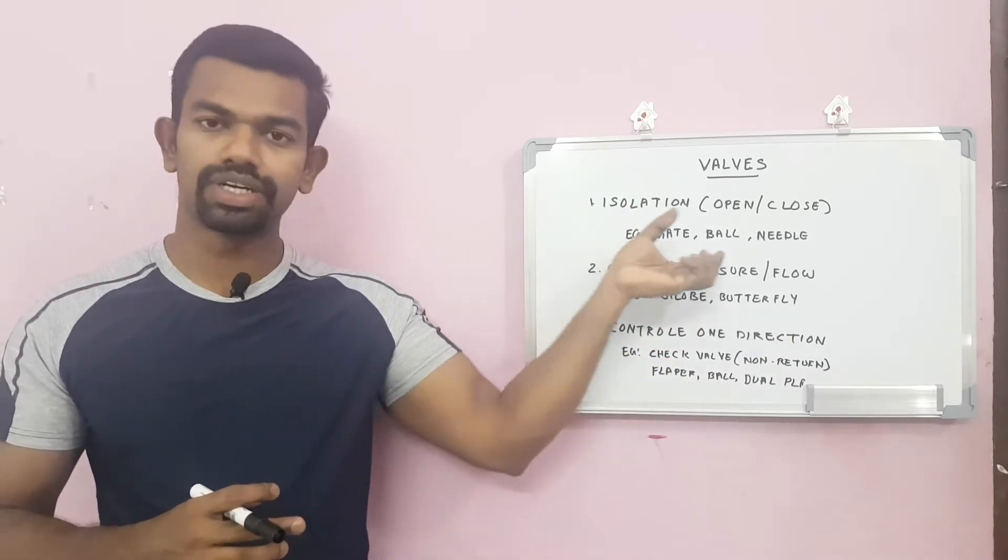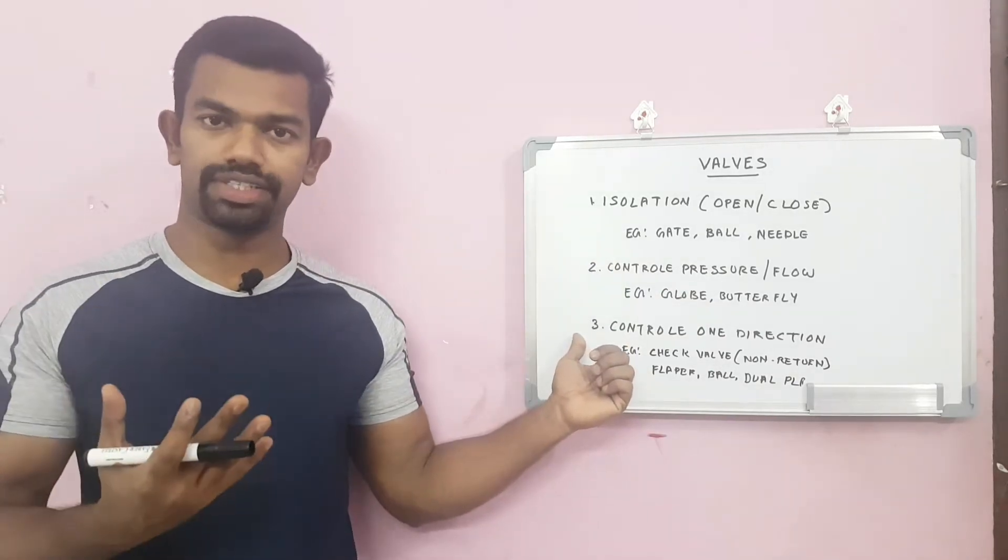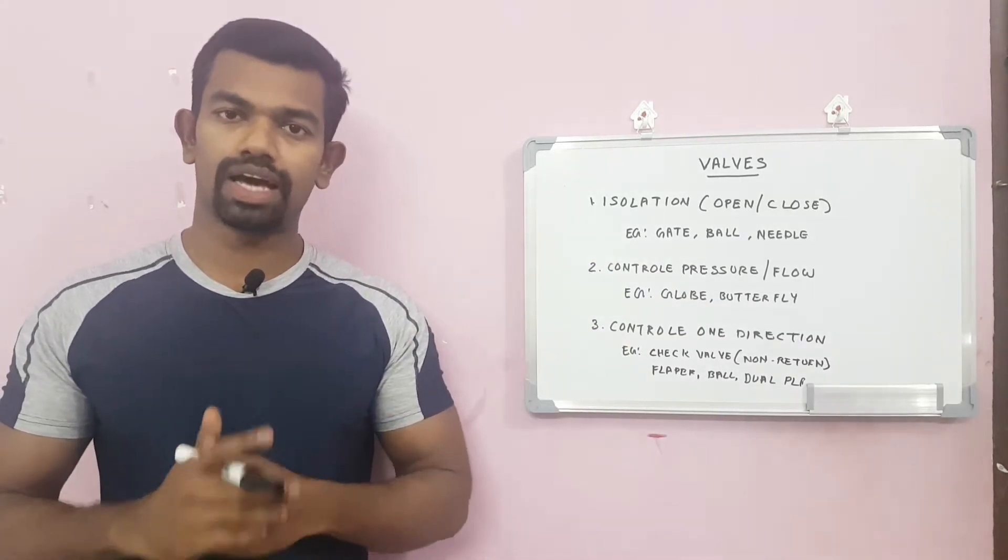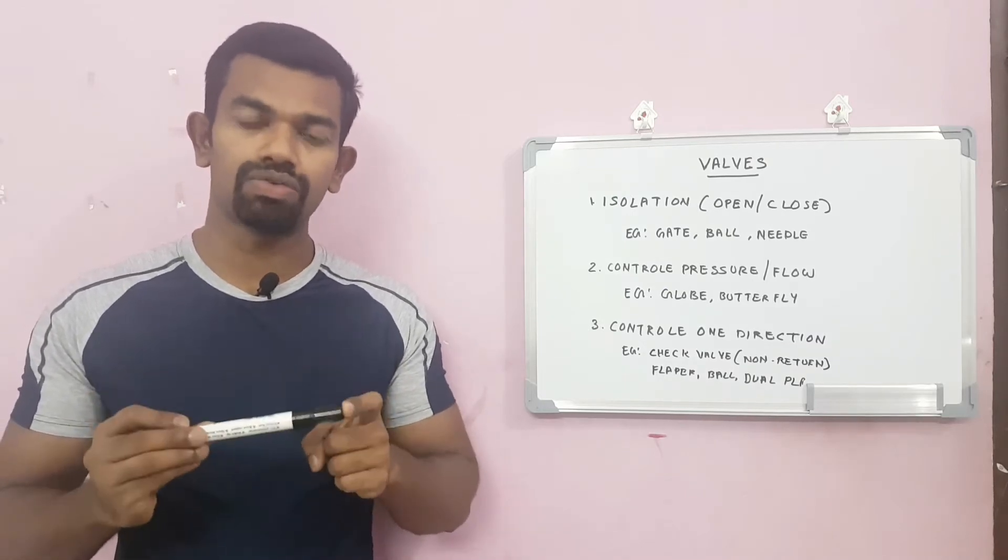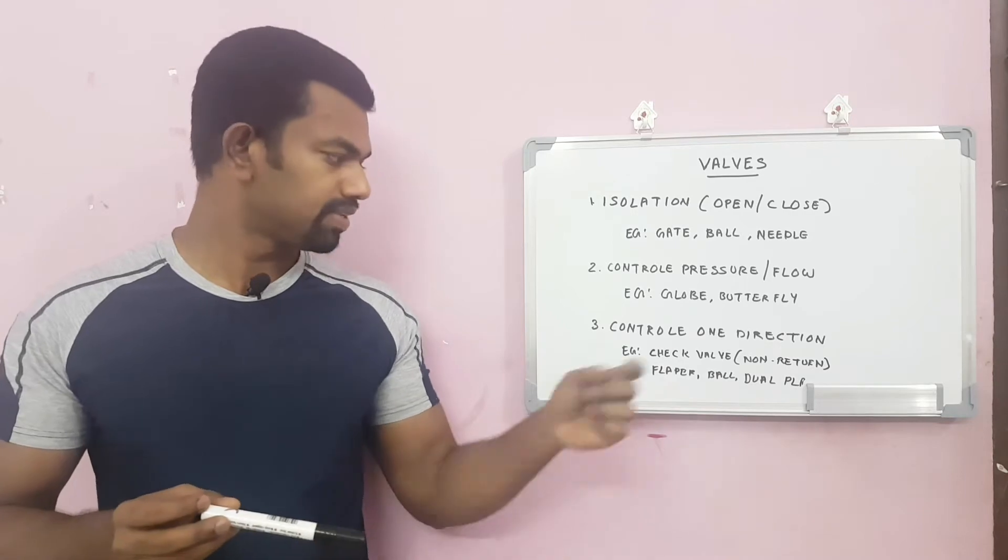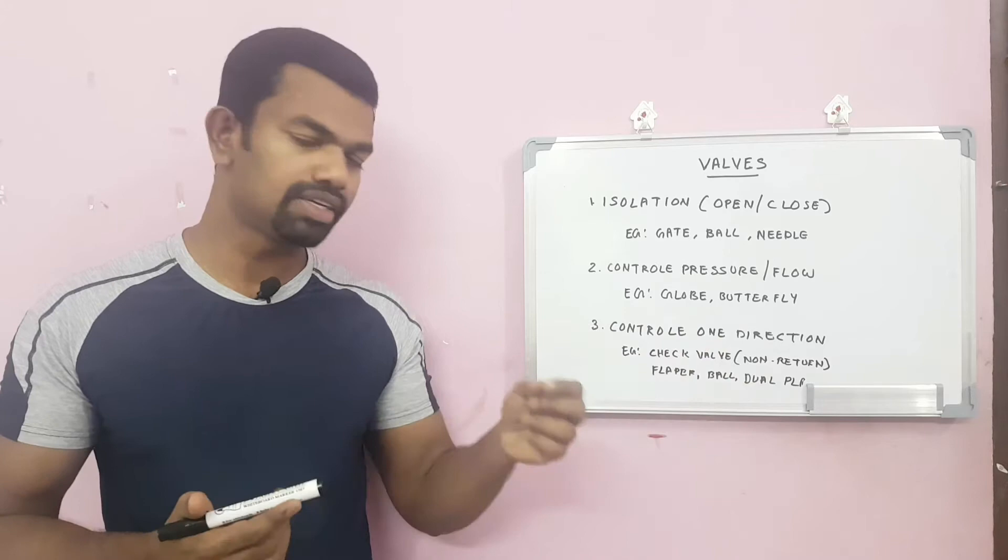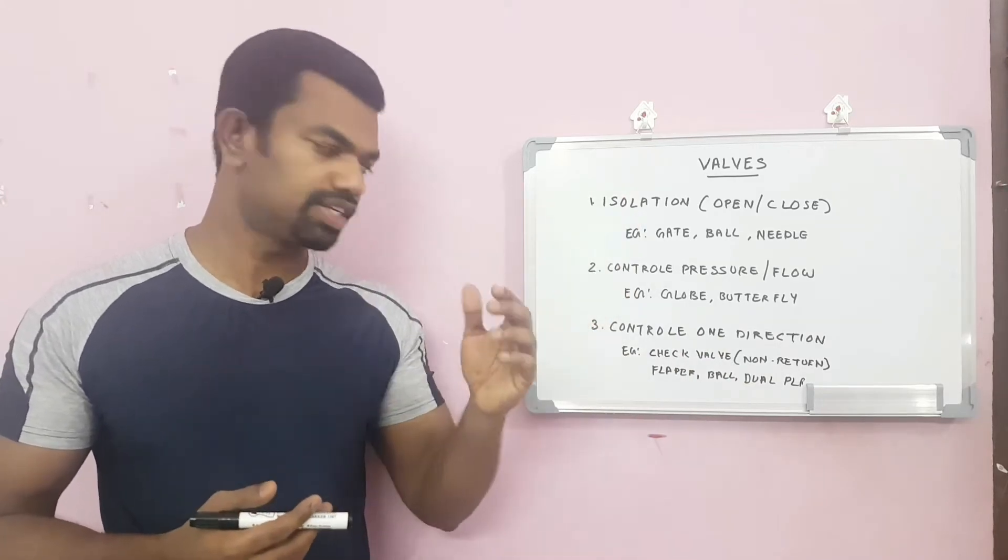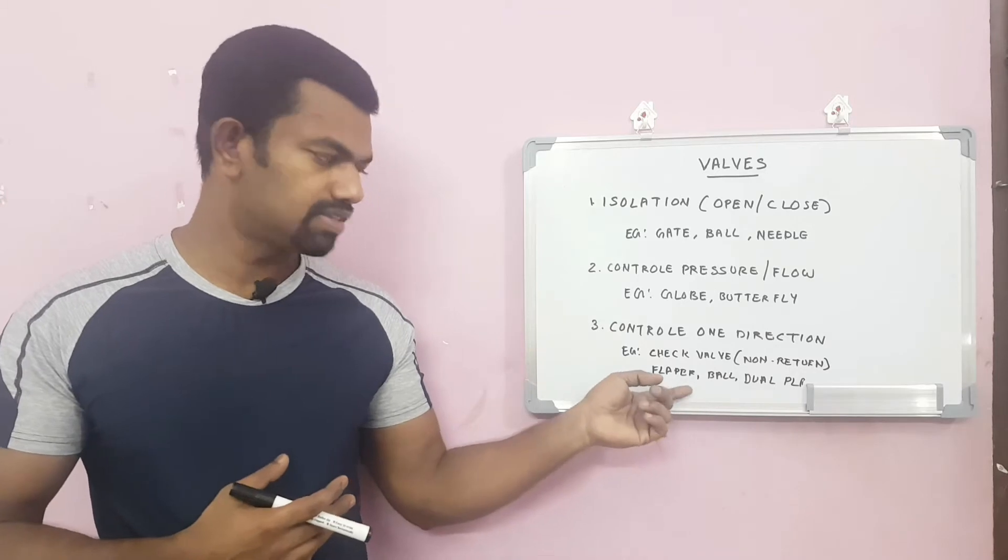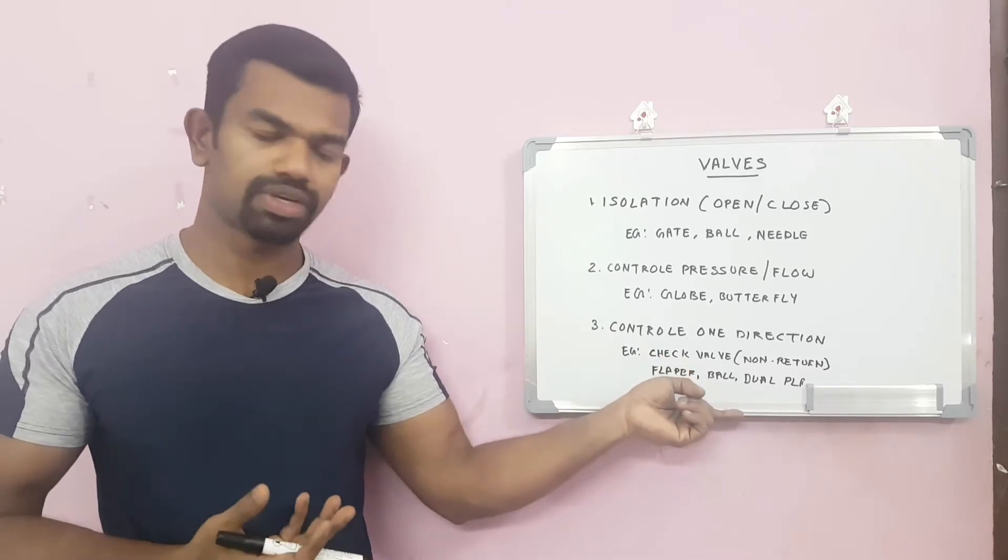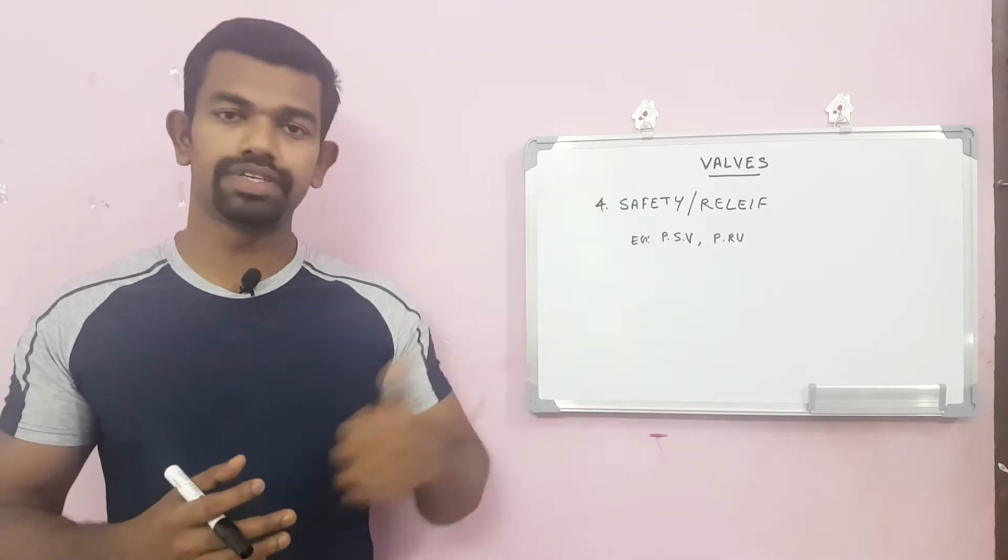Third is controlling one direction. This kind of valve will allow the fluid passing only one direction. It will not allow for the reverse direction. Examples are check valves, usually called non-return valves. As the name indicates, it allows flow only in one direction. There are many types of check valves: flipper types, ball types, and dual plate types.